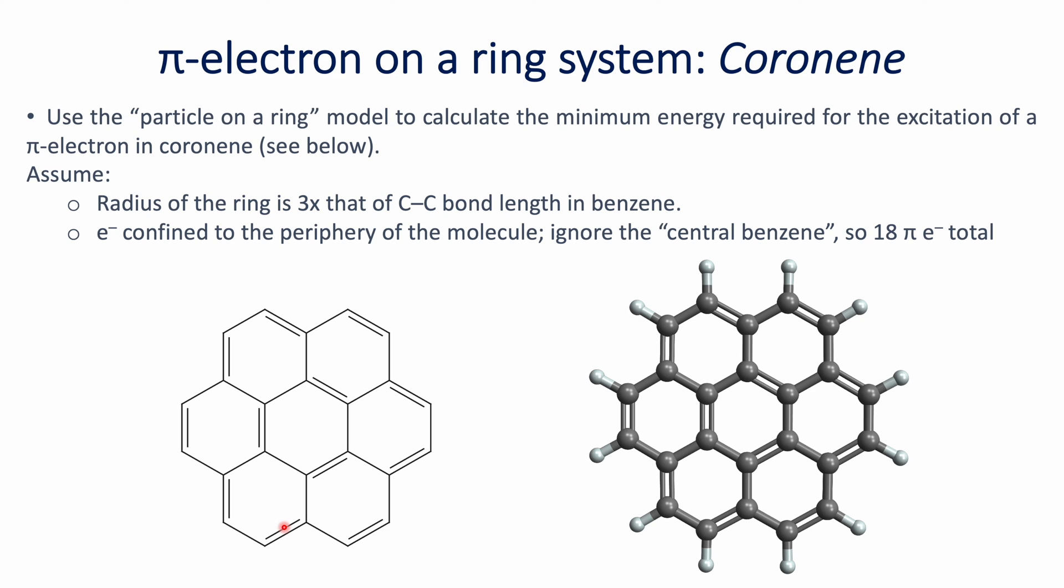Now for you to try is this other ring system: coronene. You're going to apply the particle-in-a-ring model to calculate the minimum energy required for excitation of a pi electron in this system. We're making two assumptions: the radius of that ring is three times the carbon-carbon bond length we considered for benzene, and the electrons are confined to the periphery of the molecule.